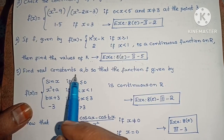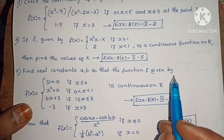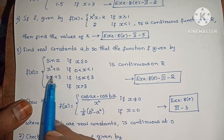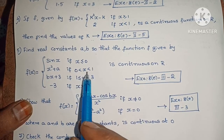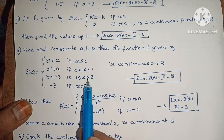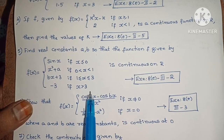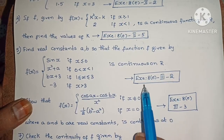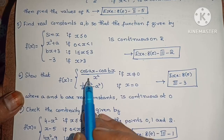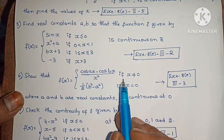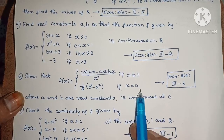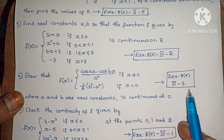Next: Find real constants a and b so that f of x equals sin x if x less than or equals to 0; x squared plus a if 0 less than x less than 1; bx plus 3 if 1 less than or equals to x less than or equals to 3; minus 3 if x greater than 3, is continuous on R. Exercise 8d, third roman law, second one. Next: Show that f of x equals cos ax minus cos bx by x squared if x not equals to 0, and half into b squared minus a squared if x equals to 0 is continuous at 0. Exercise 8d, third roman law, third problem.